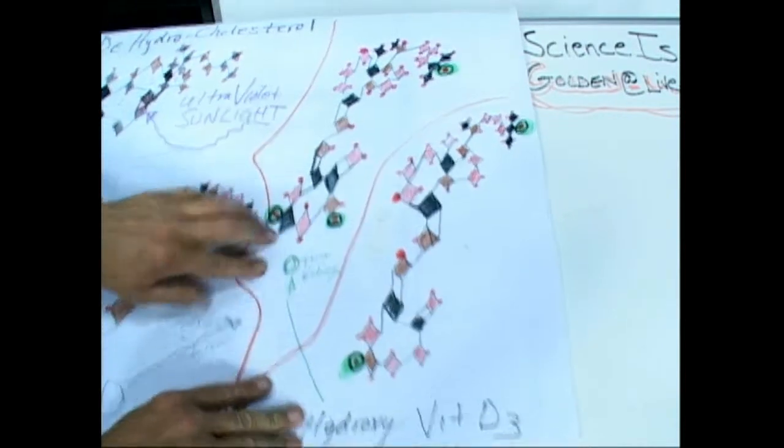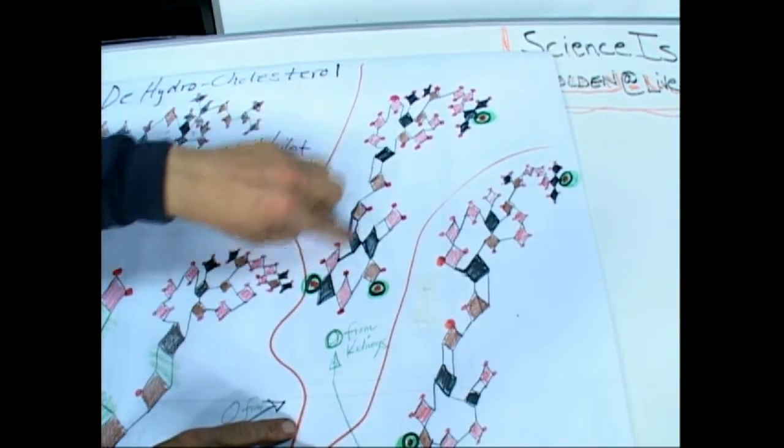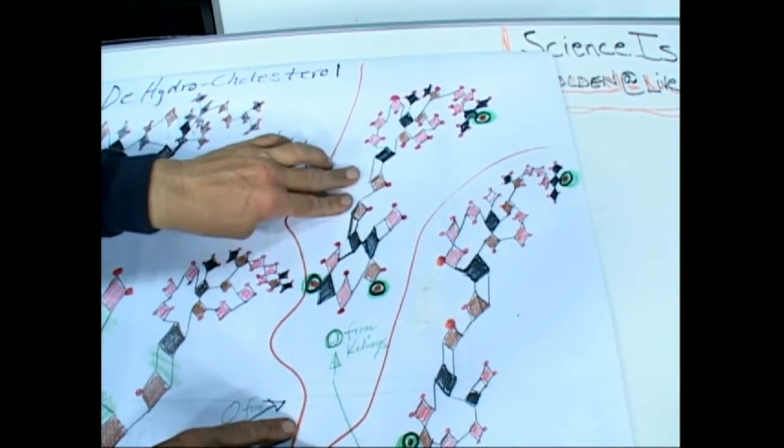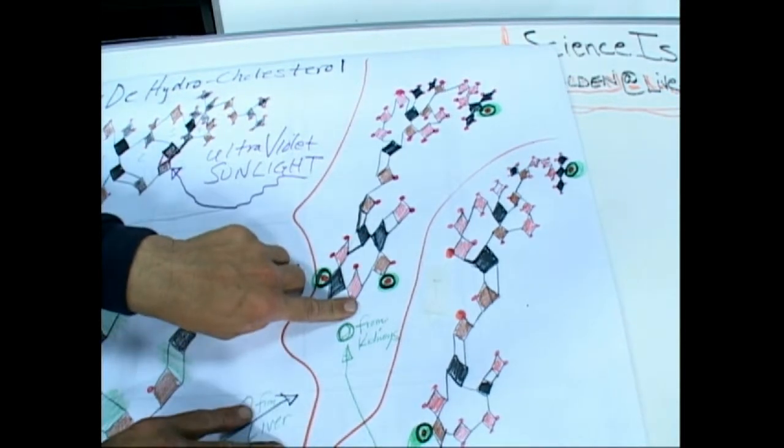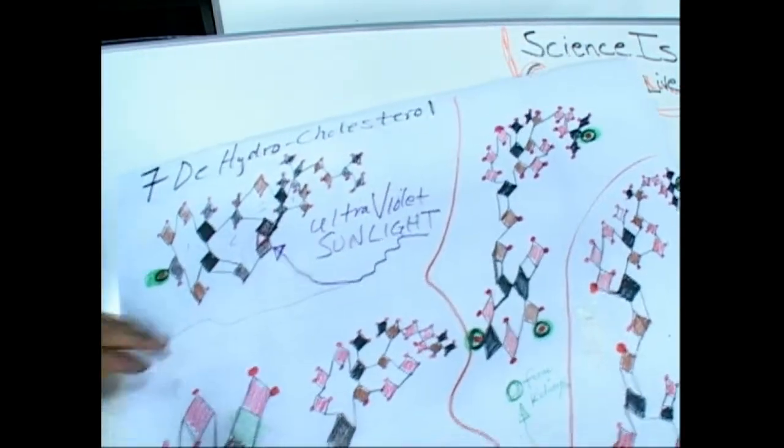Then it gets another O from the kidneys. So you get a lot of double bond stuff going on in here, hydroxylating. But it all starts with getting the ultraviolet light.